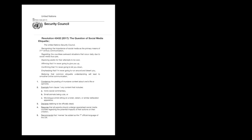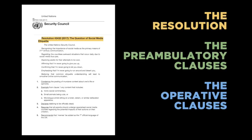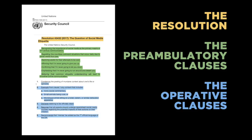Here's what a draft resolution looks like. The resolution is named after whatever issue it's trying to solve — for example, the question of social media etiquette. Each line of text is called a clause. Clauses in italics at the top are called preambulatory clauses; they give context and can't be changed. The numbered clauses are known as operative clauses because they call for some sort of action — these are the ones we'll be debating.